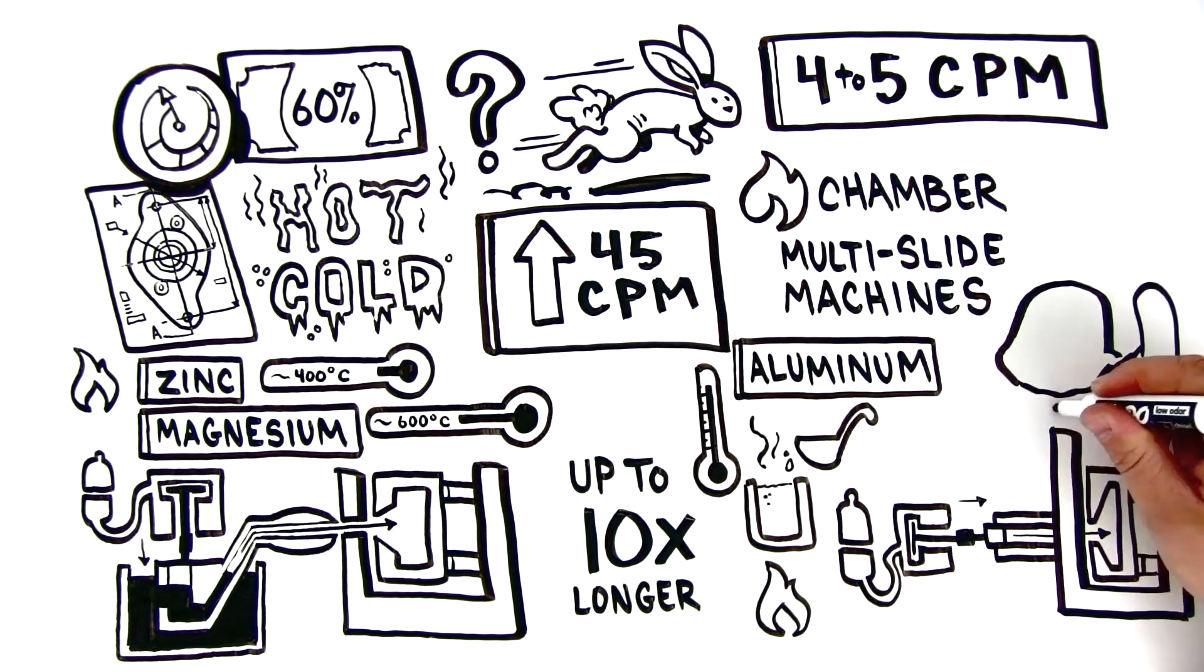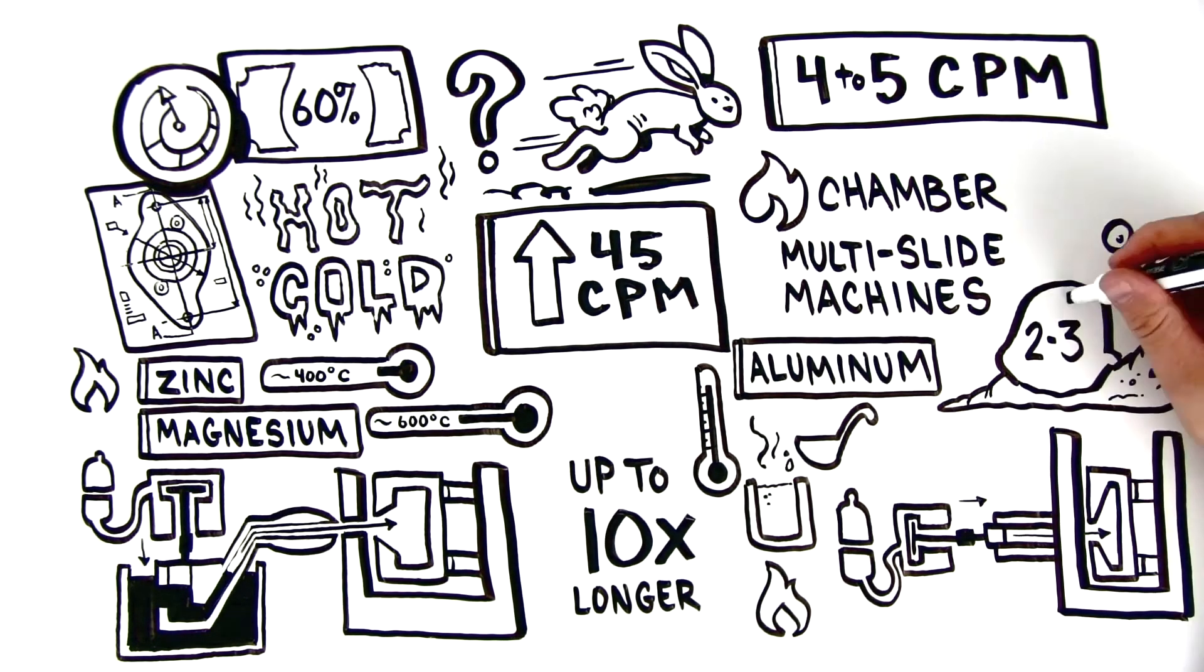This limits the design capabilities of the runner system, making it less efficient. At most, it provides 2-3 cycles per minute.